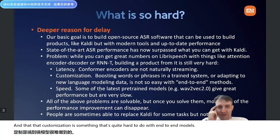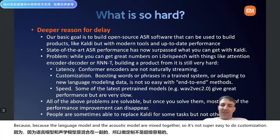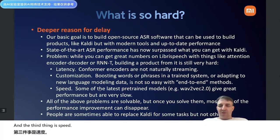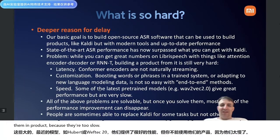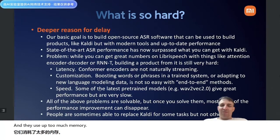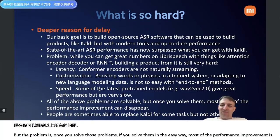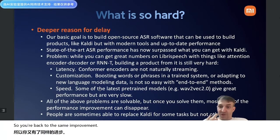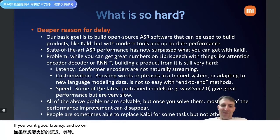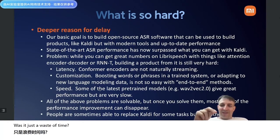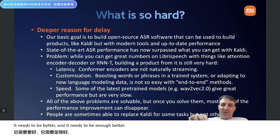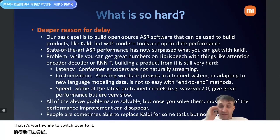The third issue is speed — recent big models like HuBERT or wav2vec 2.0 give really good performance but are too slow and use too much memory for products. You can solve all these problems, but once you do in the easy way, most of the performance improvement is gone and you're back to the same performance as Kaldi. There's no use recommending replacing an old product with something that isn't better — it needs to be better enough that it's worthwhile to switch.